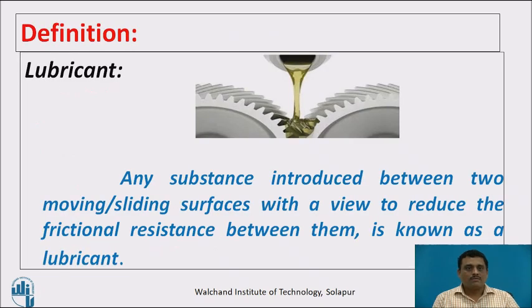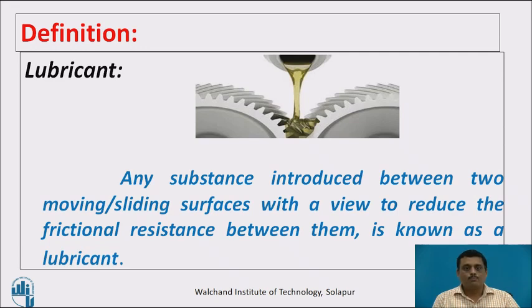Now, I would like to start with the definition. Any substance introduced between two moving or sliding surfaces with a view to reduce the frictional resistance between them is known as lubricant. Thus, a lubricant is a material introduced between two moving surfaces which avoids direct contact of two metallic surfaces and helps prevent dimensional losses of the metal surfaces.